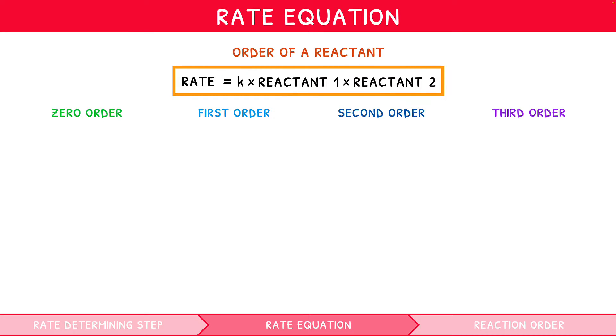For a zero order reactant, if its concentration were doubled, the reaction rate remains constant. Note here, the units for k are mole per decimetre cubed per second.